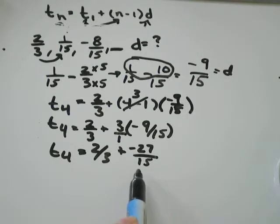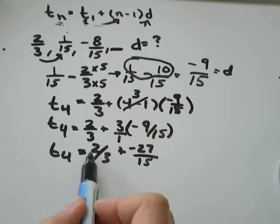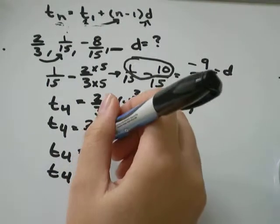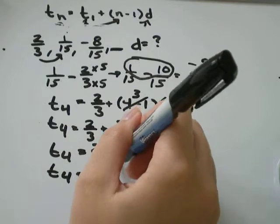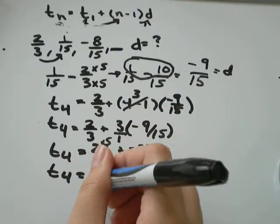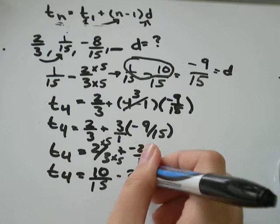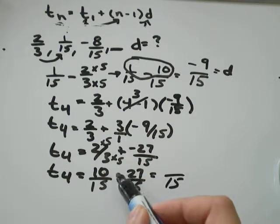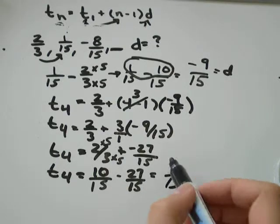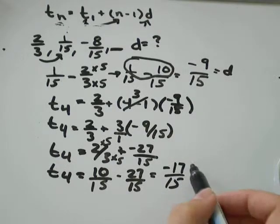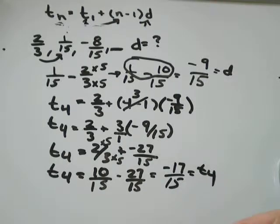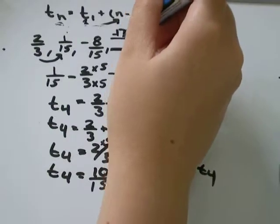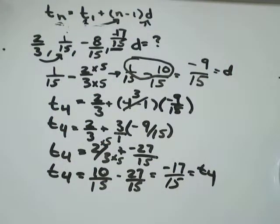Now, to be able to simplify this, I need to have common denominators, I don't, so I'll multiply my 2 over 3 by 5. 2 times 5 is 10, over 3 times 5 is 15, minus 27 over 15, and that would be equal to 10 minus 27, equal to negative 17. So I found that the fourth term would be negative 17 over 15, so I could put that in up top to my sequence.